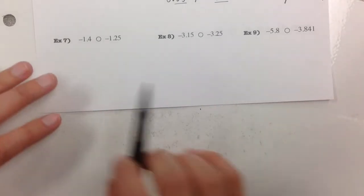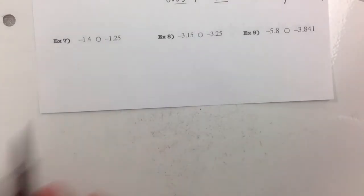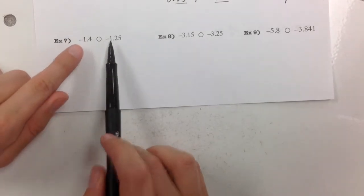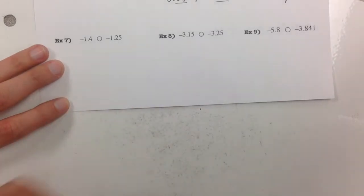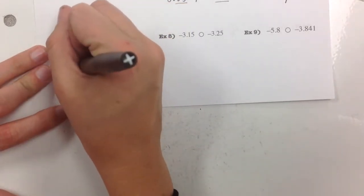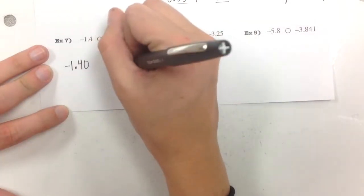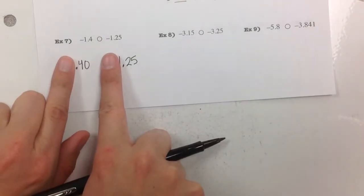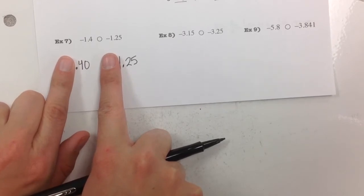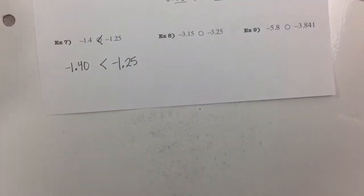Example 7: negative 1 and 4 tenths compared to negative 1 and 25 hundredths. First, are they both negative? Yes. Do they have the same whole number part? Yes. So I look at the decimal places: one decimal place vs. two. I add a zero to get 0.40 compared to 0.25. Ignoring the negatives, 40 would normally be greater than 25, but with negatives it's the opposite — it's actually less than, further into the negatives.